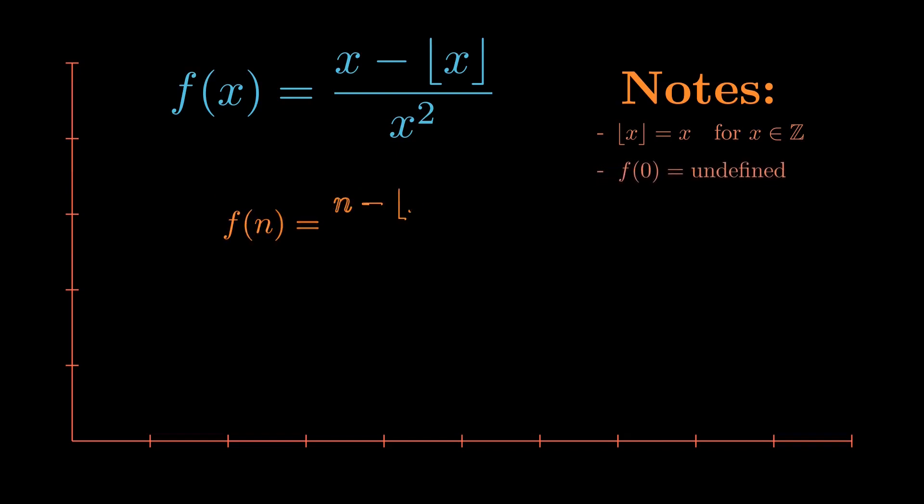f of n is equal to 0 for all other n in ℤ. We will particularly be focusing on positive integers, the natural numbers. In fact, since the integral we care about has a lower bound of 1, for the rest of this video let's assume our domain is restricted to x greater than or equal to 1.